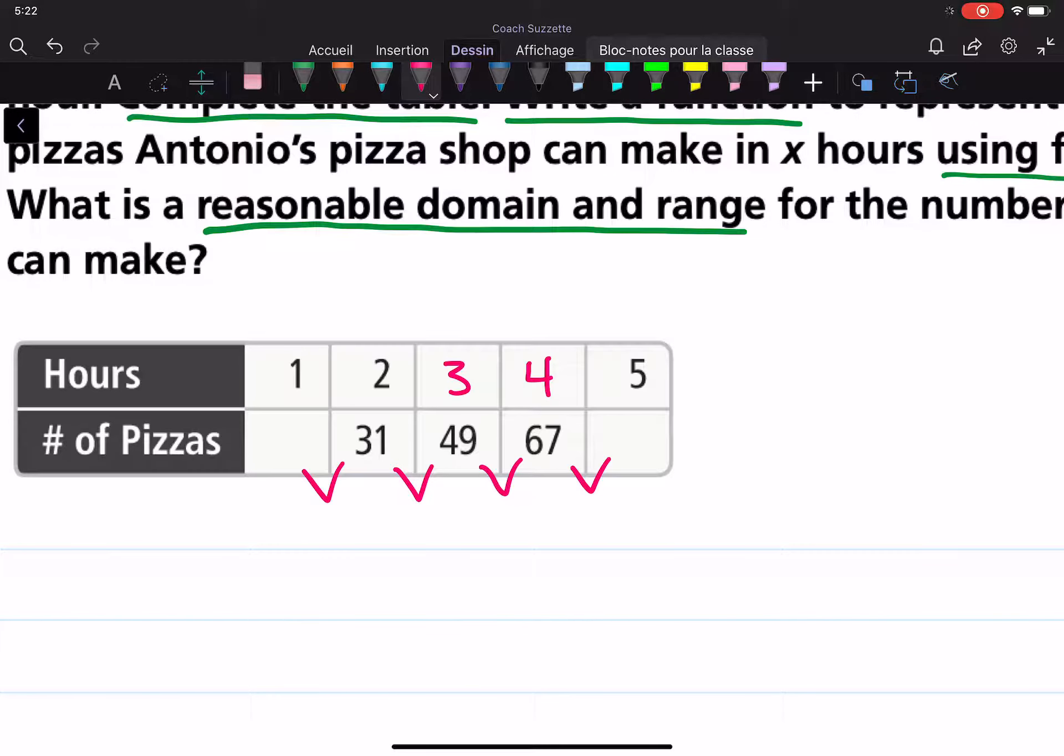Okay, so 49 minus 31 is 18. 67 minus 49 is 18.